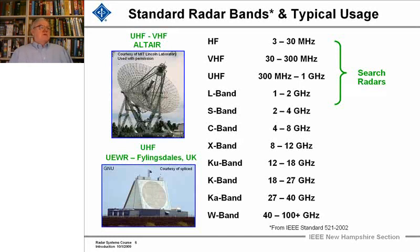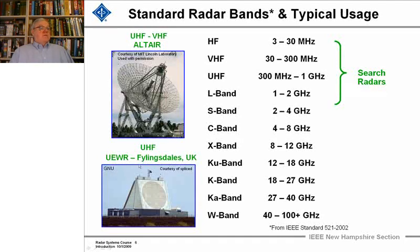We see two types of antennas: a parabolic dish that would provide one beam for tracking, and a phased array radar. This phased array transmits at both UHF and VHF simultaneously — it's an early warning radar located at Fylingdales, England. You can see they operate in the region of long wavelength.